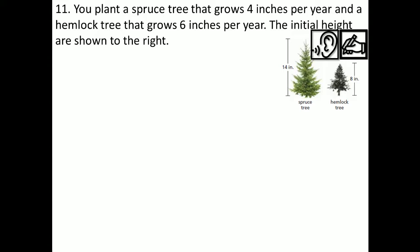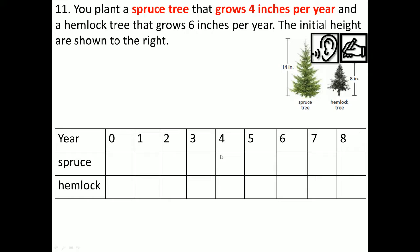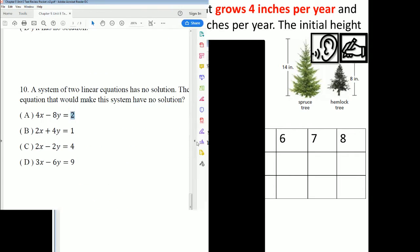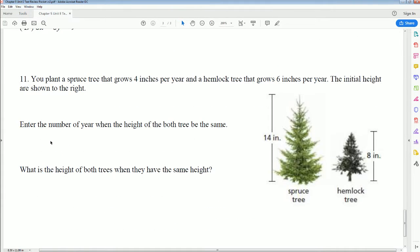Question 11: you plant a spruce tree that grows 4 inches per year and a hemlock tree that grows 6 inches per year. The initial heights are shown — the spruce starts at 14 inches and the hemlock starts at 8 inches. The question asks for the number of years where the height of both trees would be the same — the break-even point.